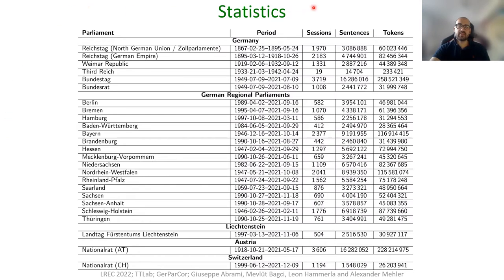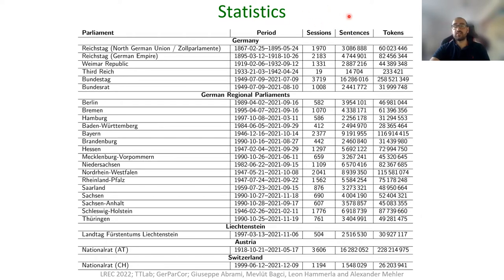The statistics tables show the parliamentary protocols of regional and national parliaments included in GERPACOR, with meta information like the period, the number of sessions, the number of sentences, and the number of tokens. The number of sentences and tokens are defined with spaCy3.